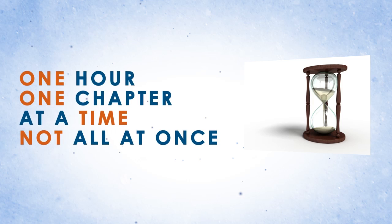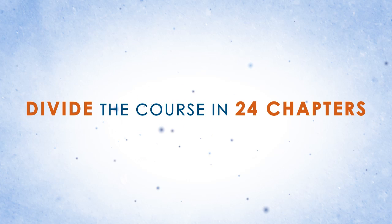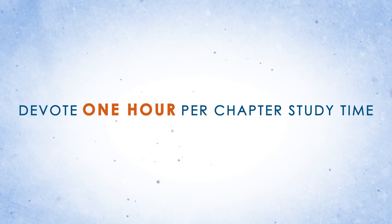Don't try to bite off the entire book at once. So how do you learn it in 24 hours then? The Rapid Learning System divides the course into 24 chapters and one hour study time per chapter.